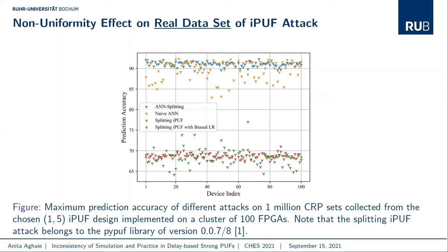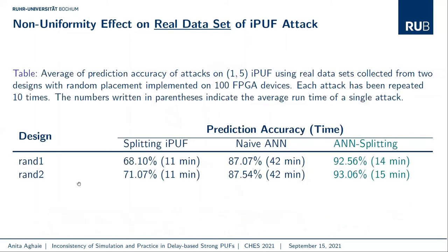In our ANN splitting attack, we changed no other attack settings except replacing the learner. Across all 100 FPGA devices, the naive ANN achieves higher prediction accuracy than the original splitting LR attack, while having lower accuracy than our ANN splitting attack on approximately half of the devices. Our ANN splitting attack not only achieves the highest prediction accuracy but also runs considerably faster than naive ANN, due to separating the learning process for each XOR ARPUF layer, allowing the learner to converge efficiently.